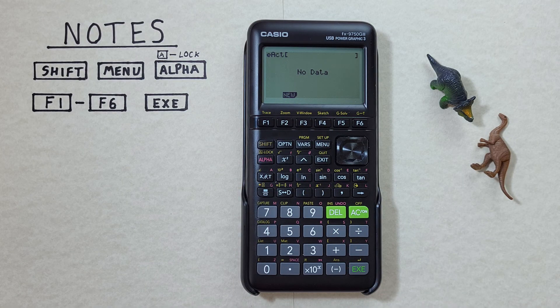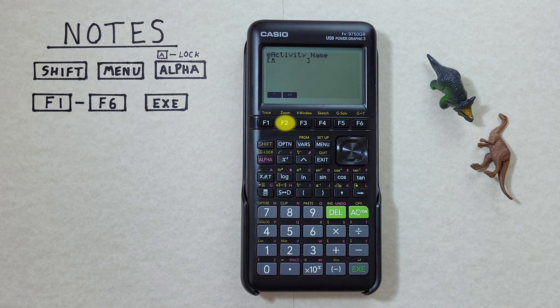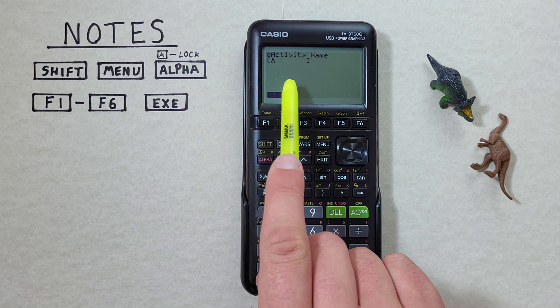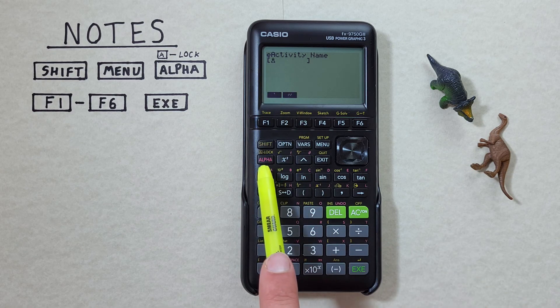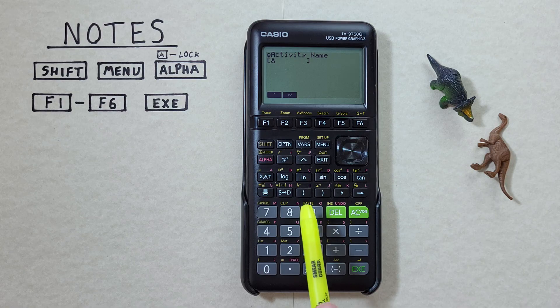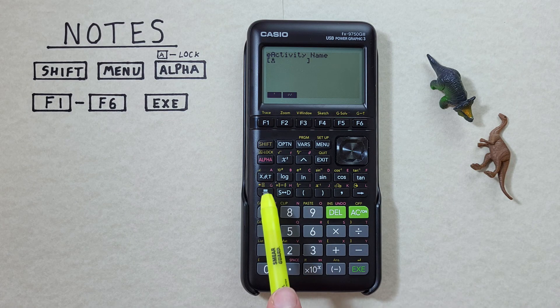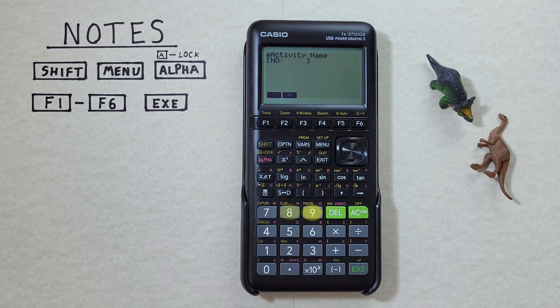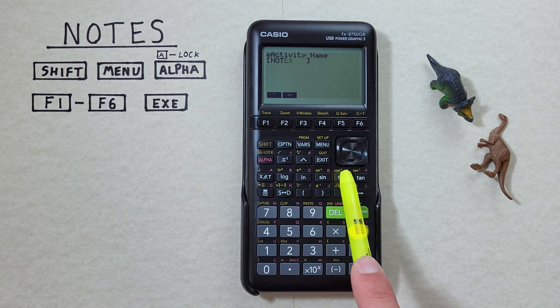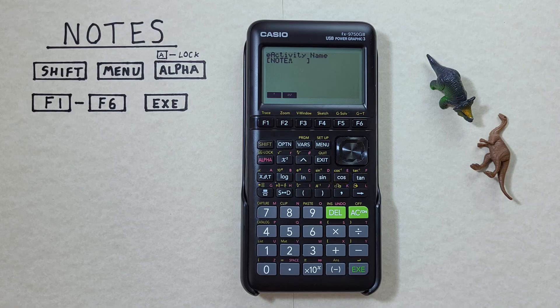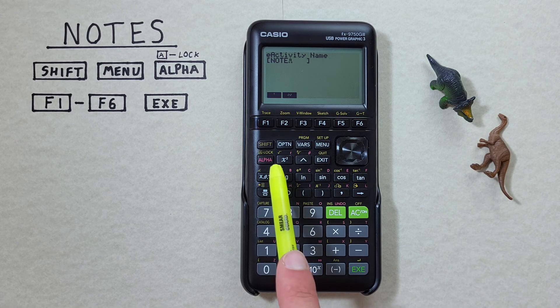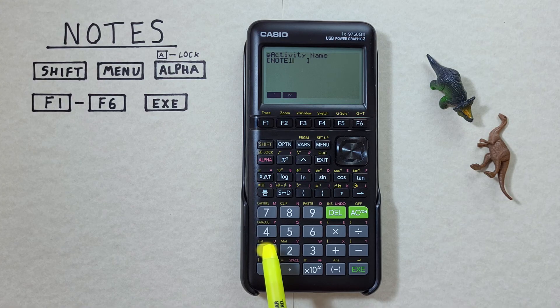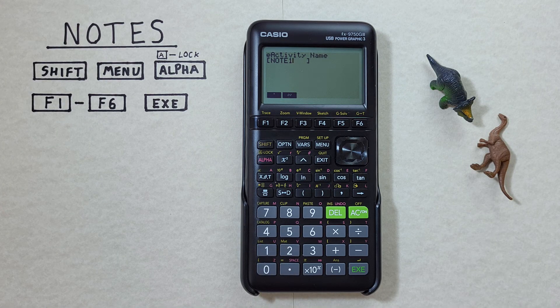To start a new note we press F2 for new and then enter the name of our note. We'll call this one note 1. You'll see our cursor is flashing with the A there. That means our alpha lock is on and when we hit a key we'll get the letter in red rather than the number or whatever function is on the main key. So we'll go ahead and enter NOTE and if we wanted to call this note 1 we need to get to numbers. So if we press the alpha key you see the cursor goes back to the regular cursor and now if we hit 1 we get the number instead of the letter.